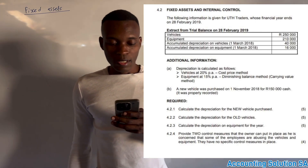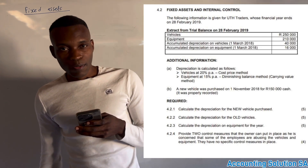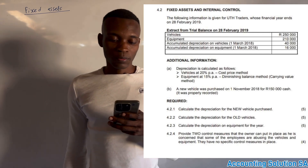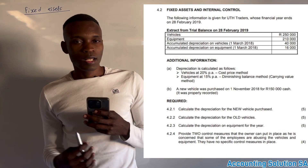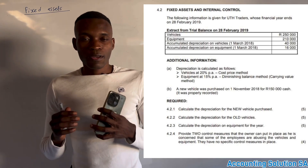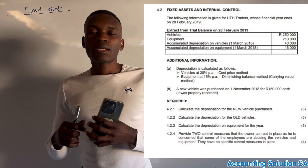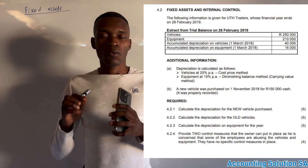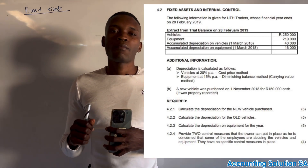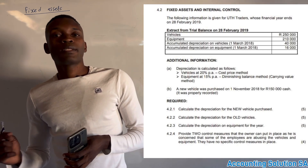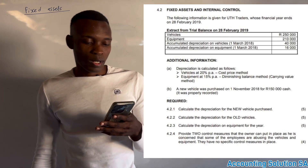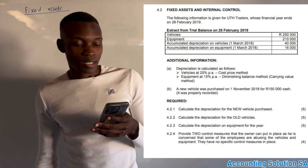Additional information: depreciation is calculated as follows — vehicles use 20% per annum using the straight line method, also called the cost price method. Equipment uses the diminishing balance method. The key difference is that for cost price method, we only use the cost price and do not subtract accumulated depreciation. For the diminishing balance method, we must first subtract the previous accumulated depreciation to get our depreciation figure.